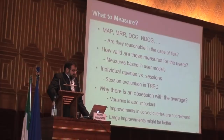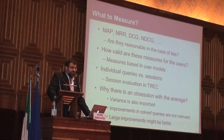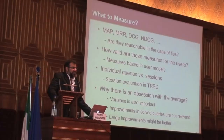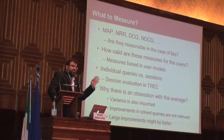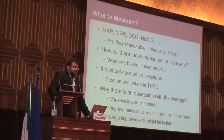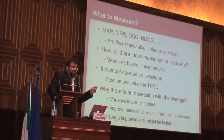Also: individual queries or sessions? And it's good to see a session evaluation tracking track. Why are we obsessed with the average? Variance is also important in web search — you don't want to be generally good but then surprise the user with one bad query. Also, if you're improving answers on popular queries that are already well answered, that's irrelevant. We want to improve the long tail. The average doesn't capture that. Large improvements in a subset might be more important because they're giving new insight — suppose 5% of queries improve by 50%; how do we highlight and give more weight to that?